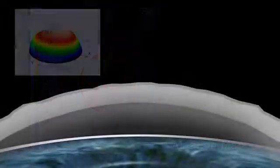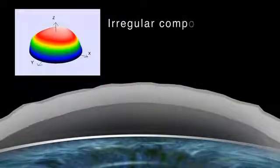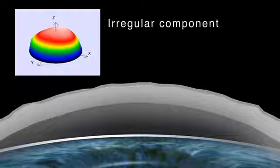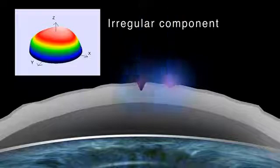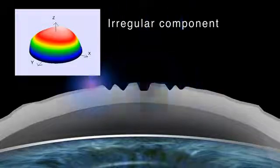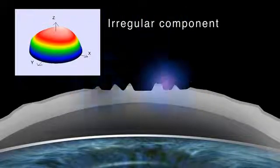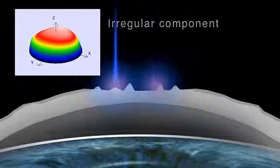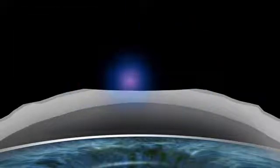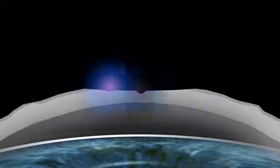TransPRK in combination with corneal wavefront is preferable for patients who need retreatment after radial keratotomy or corneal transplantation. Moreover, it can be used to treat haze, scarred corneal tissue, and keratoconus before corneal collagen cross-linking.